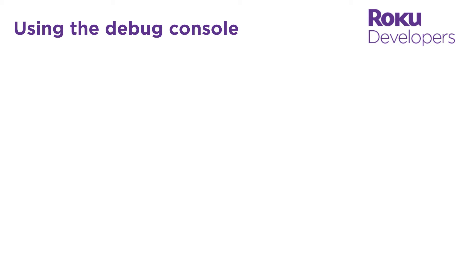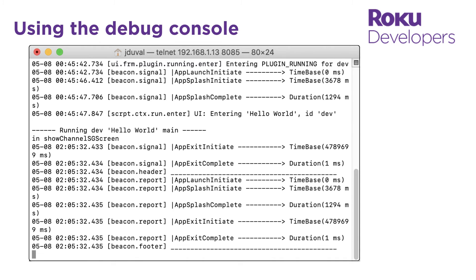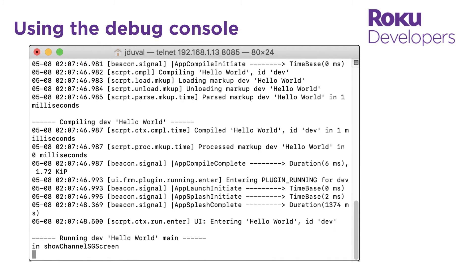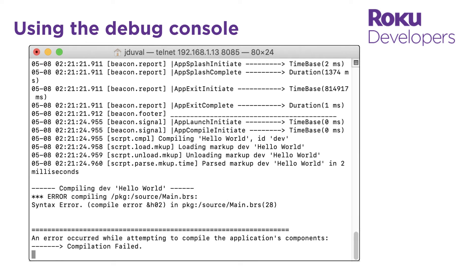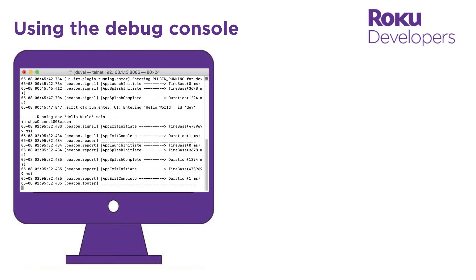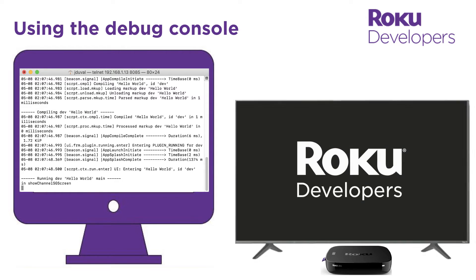If your channel doesn't behave as expected, you can use the debug console to view its output during runtime. If the channel fails during runtime, the debug console displays the line number of the error, as well as the contents of variables at the time of the failure. If the channel has compilation errors, the debug console displays them as well. It is recommended to have the debug console open whenever you are running a sideloaded channel.